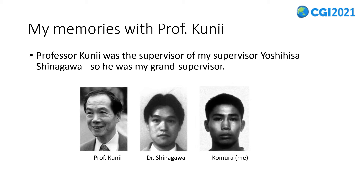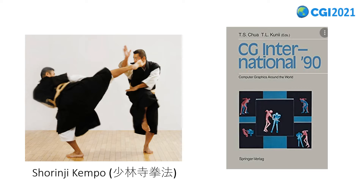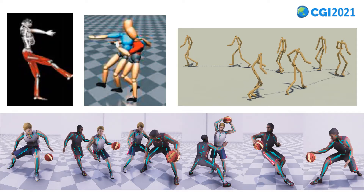Before that, I would like to memorize Professor Kuni on behalf of my supervisor, Professor Taku Kumura. Professor Kuni was the supervisor of Dr. Yoshihisa Shinagawa. Professor Kuni worked with the Shaorienji Kenpo Association to analyze the nature of human kinematics and dynamics. This was called the Shaorienji Project. The project was passed over from generation to generation and he was the fifth student who inhabited the project. The project then developed into a character animation project, and he is still working on this topic. He really appreciates Professor Kuni's supervision and support when he was a student.